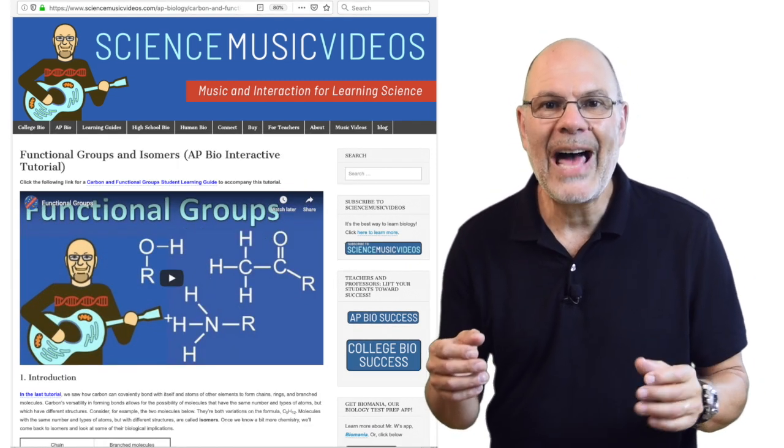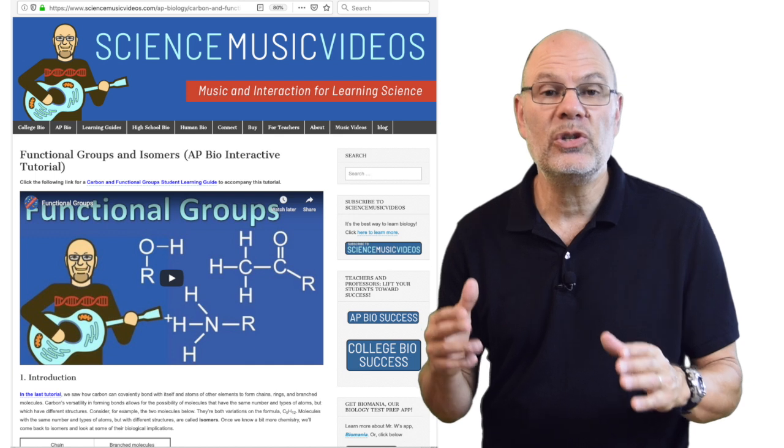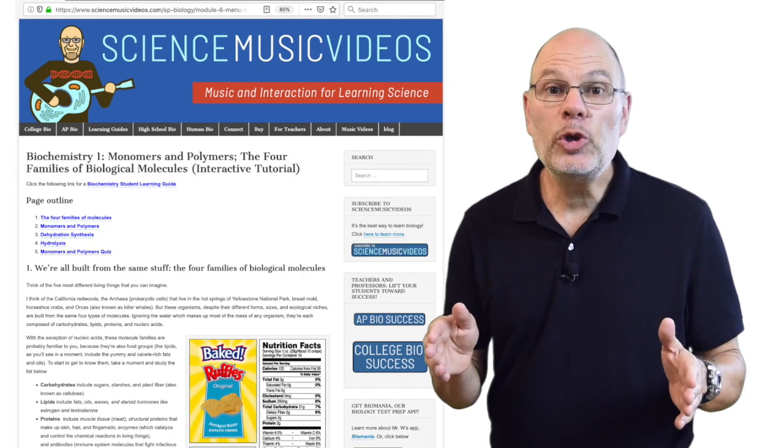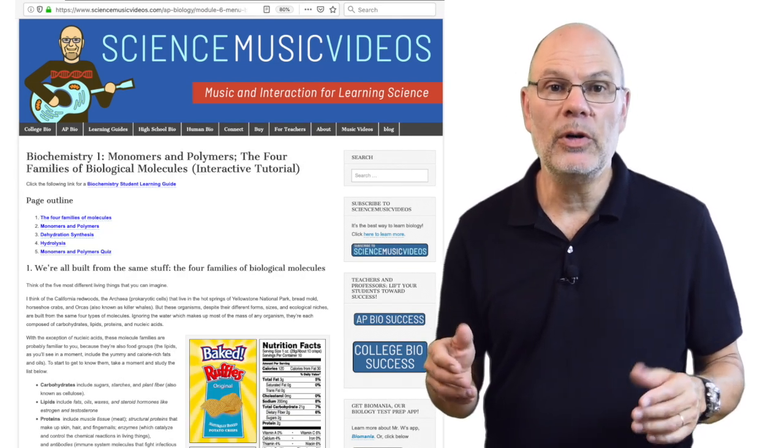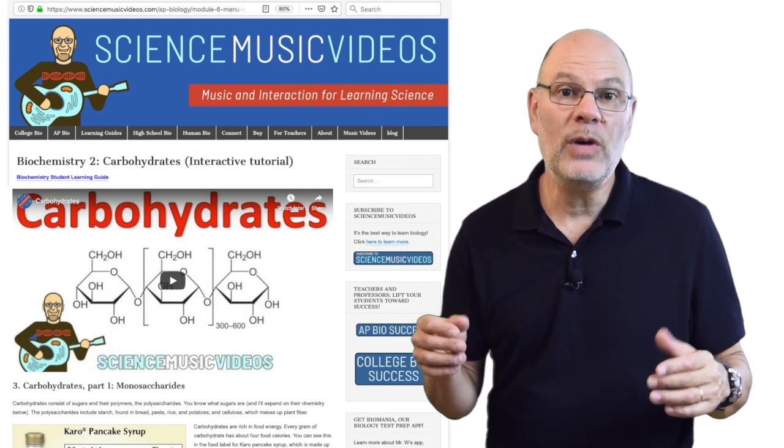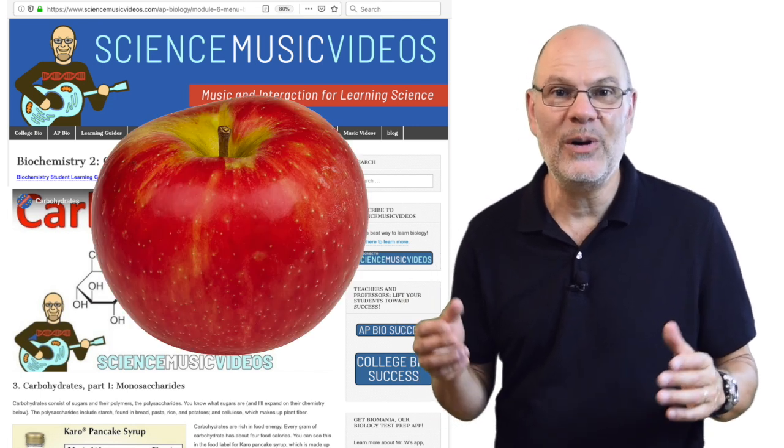These are small groups of atoms that give organic molecules their distinct properties. The third tutorial is about monomers and polymers. The fourth is about carbohydrates, like this apple I talked about in the first video of the series.